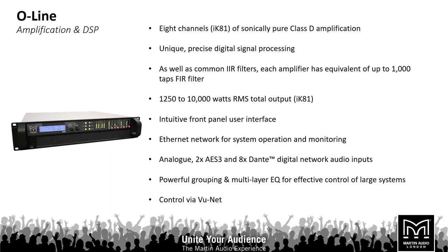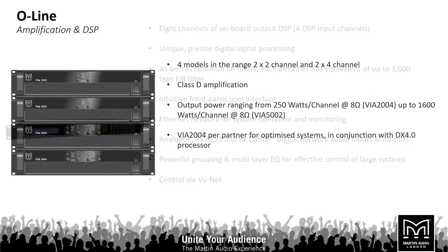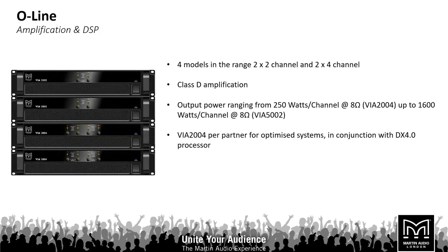As well as the RK81 amplifier we also have the DX4 processor, which in many regards is identical to the RK81 — the main difference being that it doesn't have eight channels of amplification. It has all the same I/O and the same processing inside and can be paired with any amplifier you wish to drive the system. It pairs really easily with our VIA series of amplifiers — there are four models in the range, two two-channel amps and two four-channel amplifiers, all Class D, with output power ranging from 250 watts per channel at 8 ohms up to 1600 watts per channel at 8 ohms. The VIA 2004 is the perfect partner for these optimized systems in conjunction with the DX4 processor.